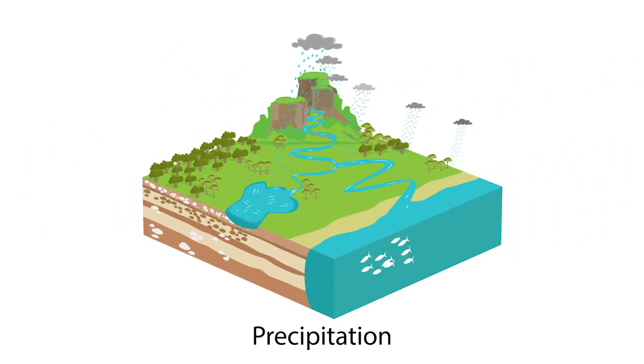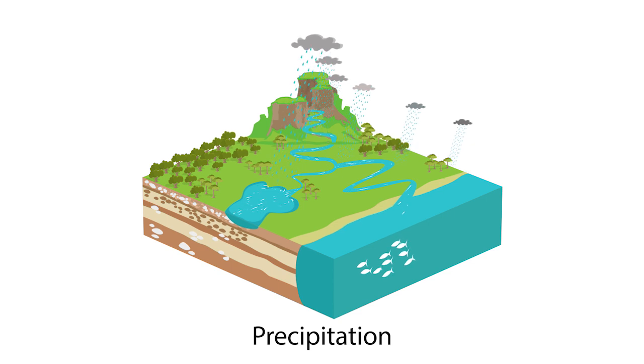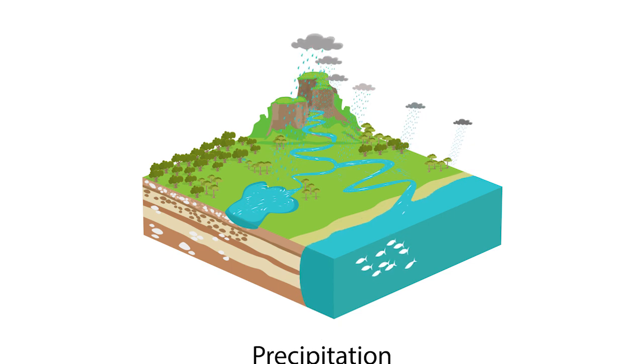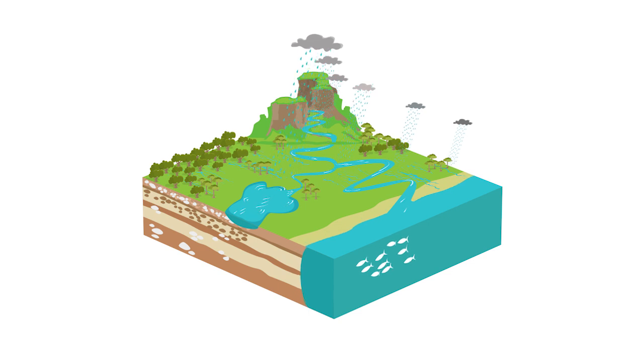Precipitation can happen anywhere, but some places receive more than others, depending on the shape of the landscape. When precipitation falls, it flows through a catchment area to a common point like the ocean or a lake. It can travel through waterways and over or under the ground.